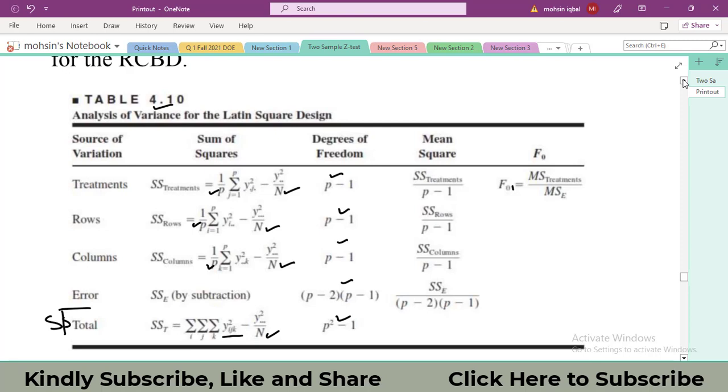Now we talk about this y triple dot whole square. What is it? When you take the sum of all individual observations, we call it y triple dot, and taking it square. We also call this value as our grand total (GT) or grand sum. So it is up to you what you will give it the name.